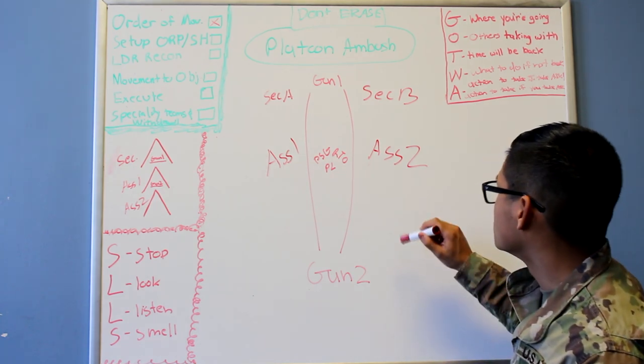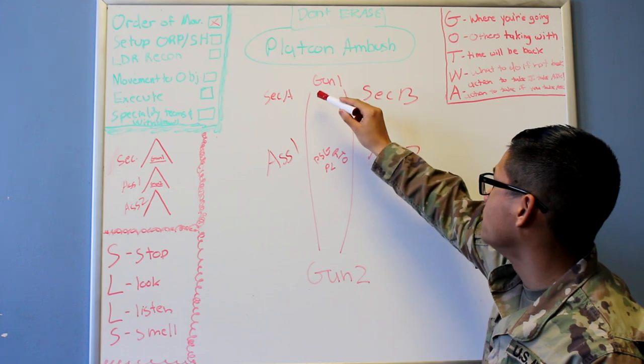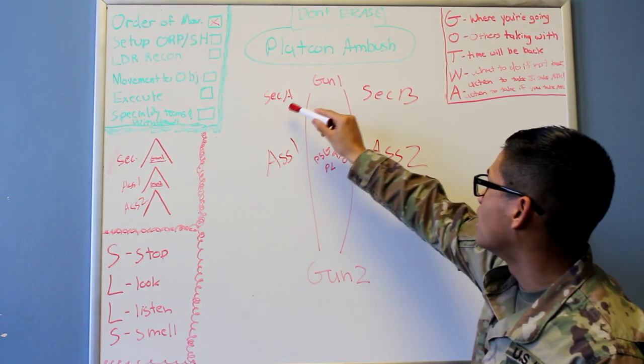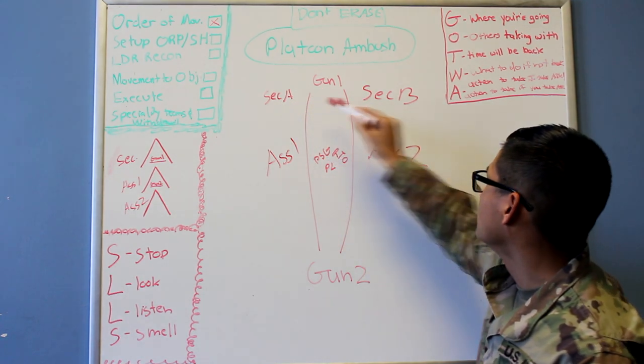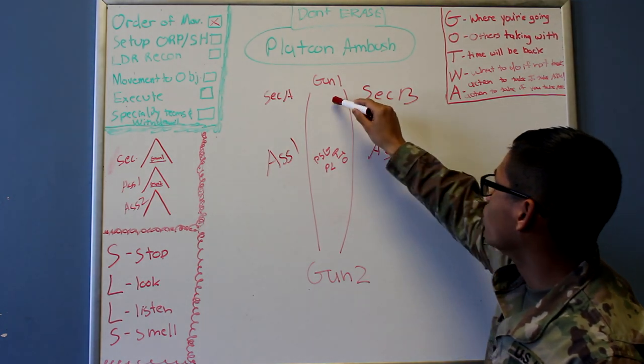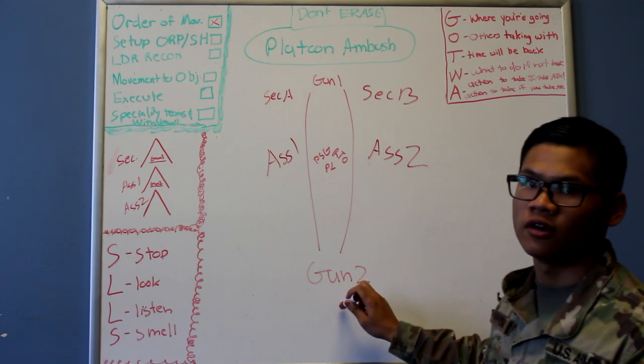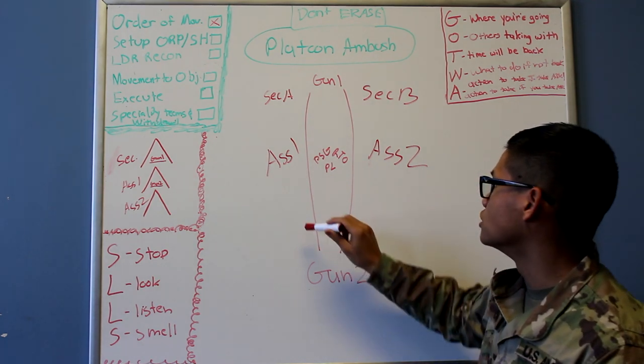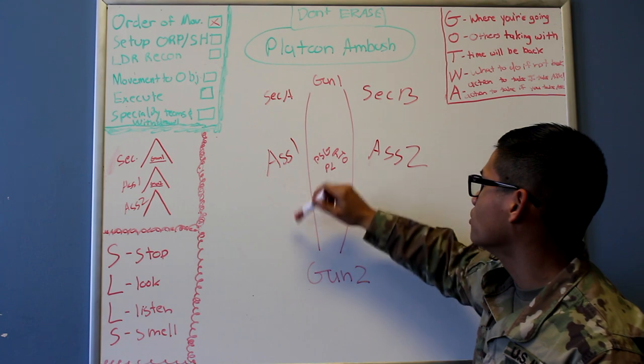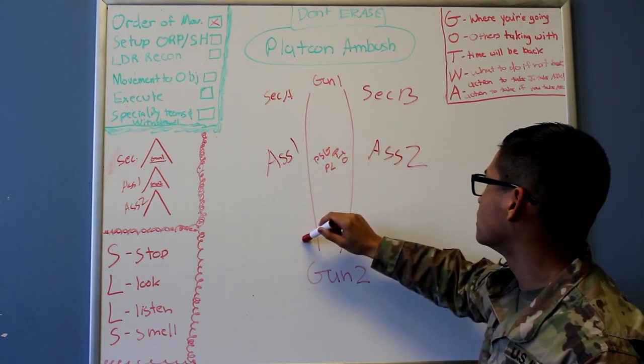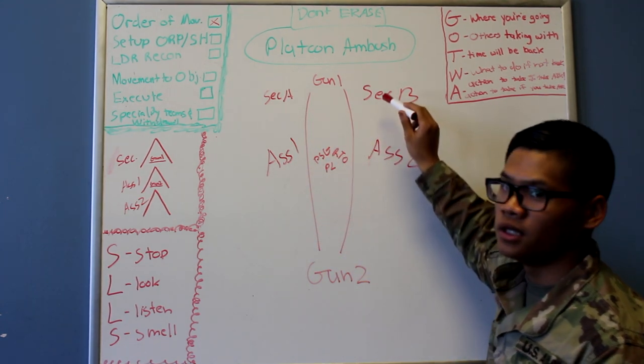From there, security will go from the very peak of the cigar shape. Alpha side will be on the left and security Bravo will be on the right. Gun 1 will move all the way to the top of the cigar shape while Gun 2 will be at the very most rear. Assault 1, from top to bottom, will be on the left side of the cigar shape and Assault 2 will be on the right.